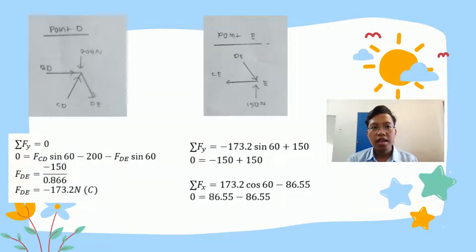Next is point D. At point D we have three forces attached to point D: force BD, force CD and force DE. Now we already have two values, force BD and force CD. Here I use sum of force Y equals zero. We substitute into the equation the related forces, force CD and force DE. Why use FY? There is an additional force of 200 N from top to bottom. Zero equals force CD sin 60 minus 200 minus force DE sin 60. Force DE equals negative 150 divided by 0.866, and we get force DE equals negative 173.2 N, and it is compression.